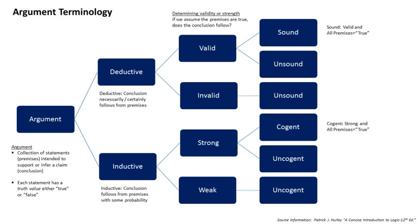This can be done by giving a counter-example of the same form of argument with premises that are true under a given interpretation but a conclusion that is false under that interpretation — in informal logic, this is called a counter-argument. The form of argument can be shown by the use of symbols. For each argument form, there is a corresponding statement form called a corresponding conditional, and an argument form is valid if and only if its corresponding conditional is a logical truth. A statement form which is logically true is also said to be a valid statement form, which is true under all interpretations — shown either by demonstrating it is a tautology or by means of a proof procedure.